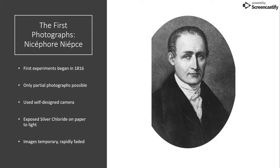It wasn't until sometime in 1816, however, that the first experiments with photography began. An inventor by the name of Nicéphore Niépce successfully created the first partial photographic image by experimenting with a small self-designed camera. By exposing silver chloride to light, Niépce was able to produce a temporary image, but that faded rapidly.